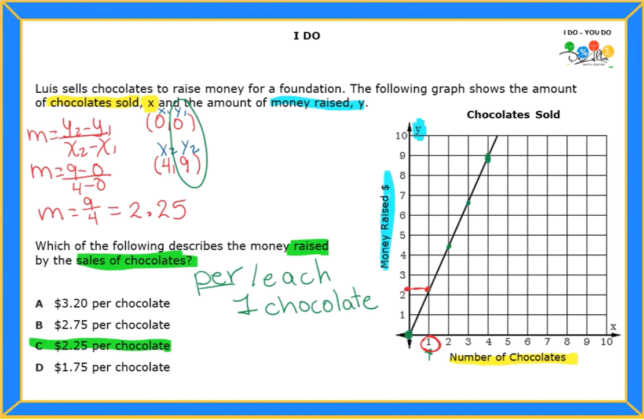You know that we can create a table to show the relationship between the number of chocolates sold and the money raised. So let's consider making a table here where X is gonna be the chocolate that they're selling, and the Y is gonna be the money that they raise.